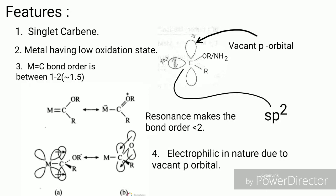Let's take a look about the features of Fischer carbene. The Fischer carbene is singlet carbene having one vacant p orbital. The Fischer carbene has metal carbon double bond, and the carbon atom has one alkyl group and the other OR or NH2 group attached.